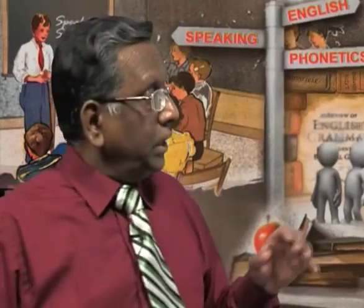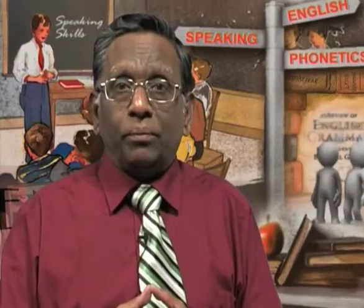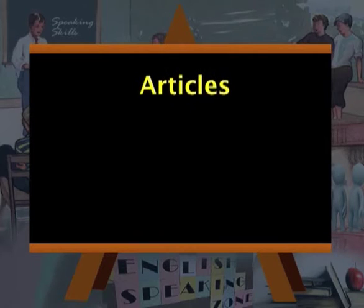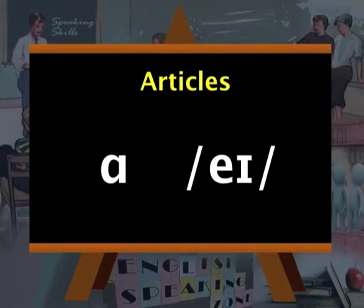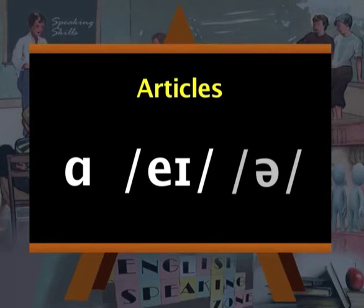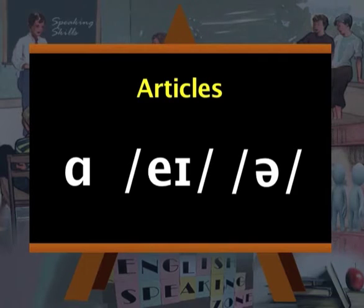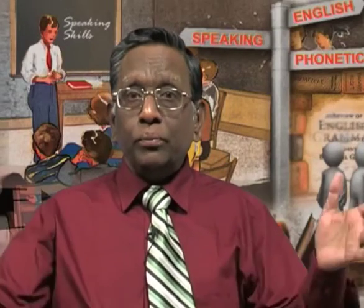Now the important thing to note is what happens to the structural words in such a situation — how are they weakened? What is the strong form and what is the weak form? Let's start with the articles. The indefinite article 'A' — the full form of pronouncing this is 'A,' and when we say the alphabet we say 'A.' But in most cases in our day-to-day conversations it will be pronounced simply as 'a.' So we say 'a book,' 'a pen,' 'a room,' 'a college,' 'a university' — just 'a,' that's all.